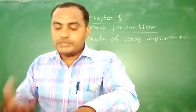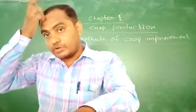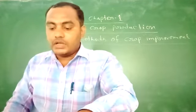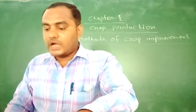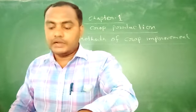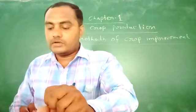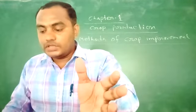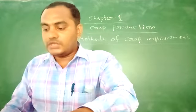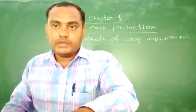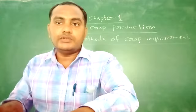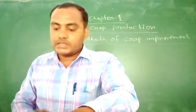We can use some methods to increase crop production. The first method is selection. Crop varieties that are high yielding and are resistant to disease and pests are selected and multiplied. We should select varieties that give a lot of production and are resistant to disease.